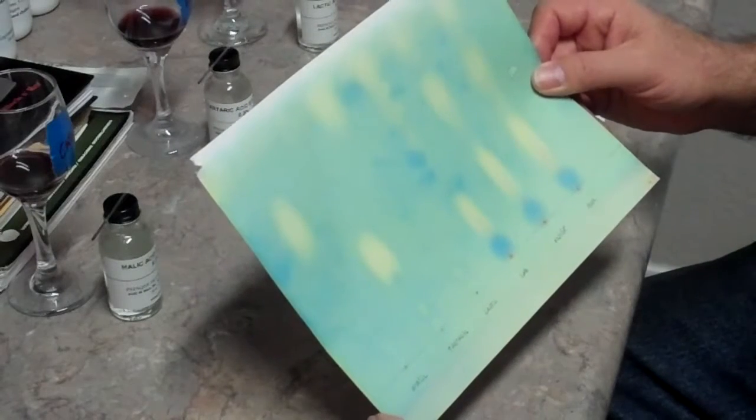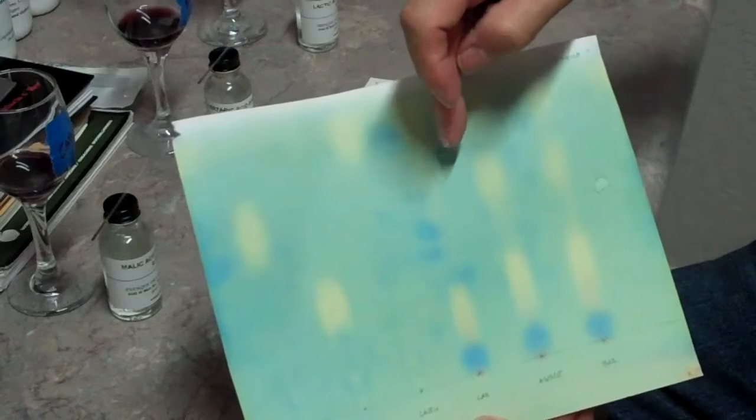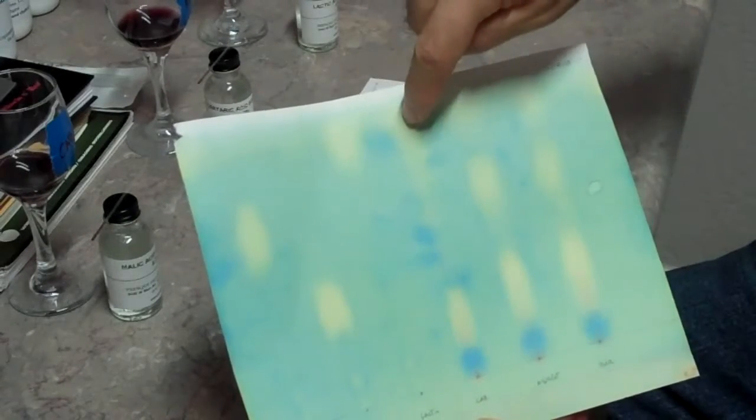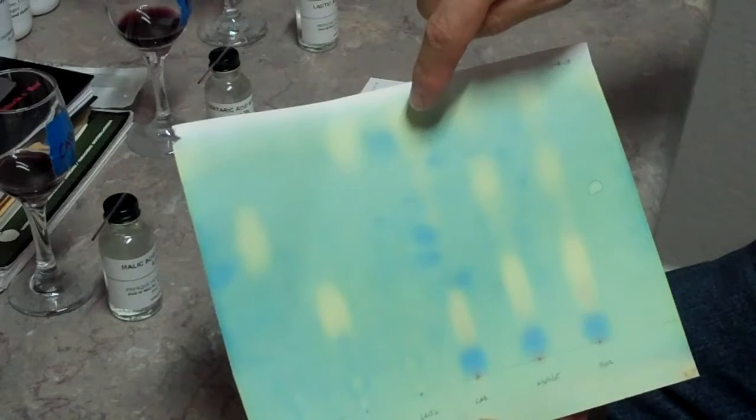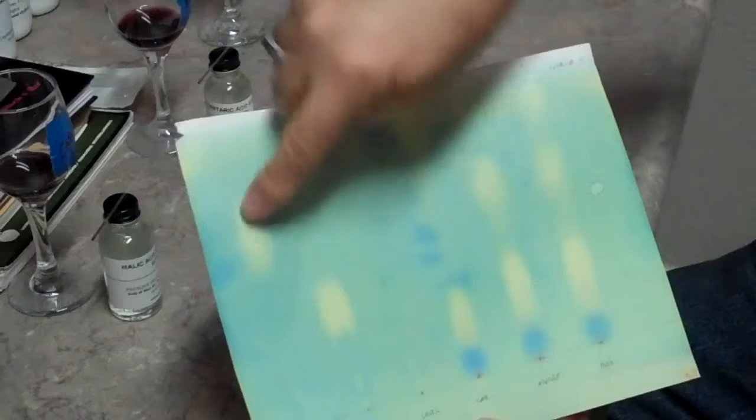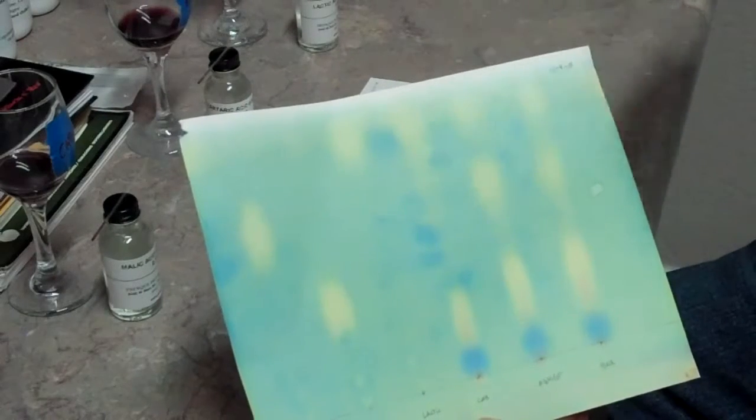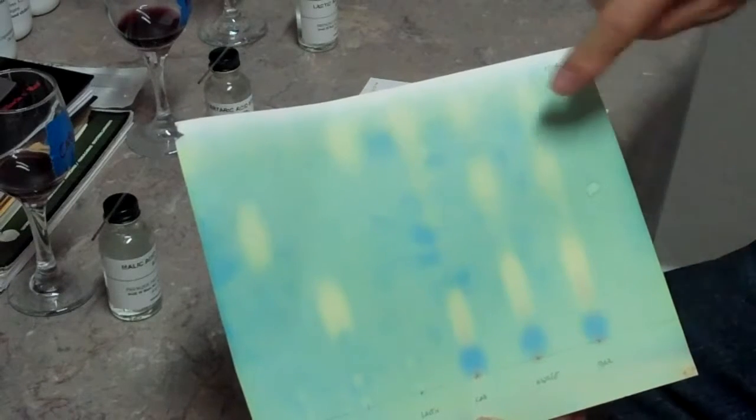I'm testing these same three wines. I can see that my cab has some lactic acid in it, which is good because we're turning the malic into lactic. My malic sample is here, and I have just a little bit of malic still left in that cab. That was on November 9th.